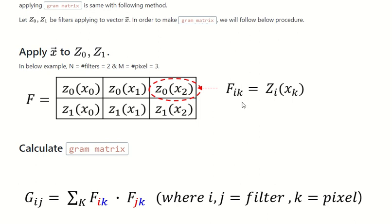F_ik is Z_i(x_k), where x_k is the pixel element, and this pixel is applied by the filter Z_i. It's very simple.